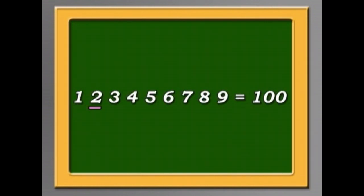So we have 1, 2, 3, 4, 5, 6, 7, 8, 9 equals 100. Now I'm not going to do this for you, because you can spend hours having lots of fun trying to work it out.